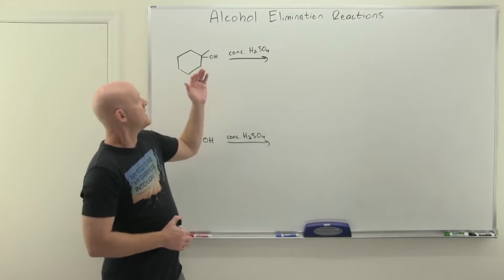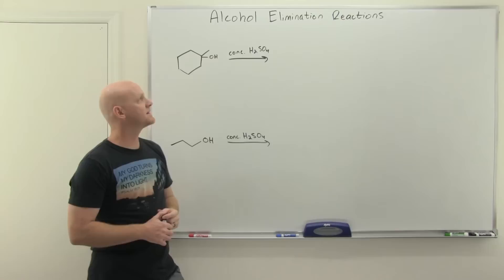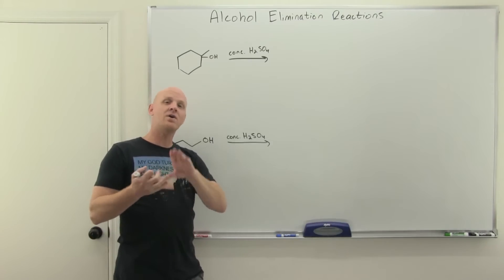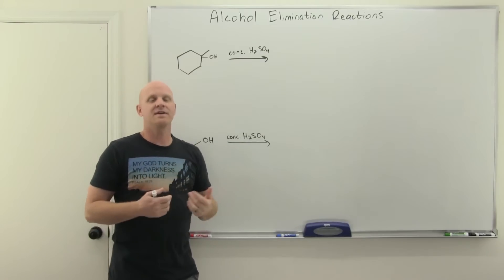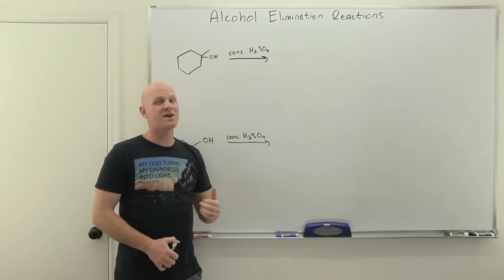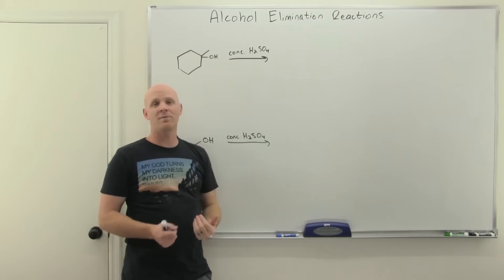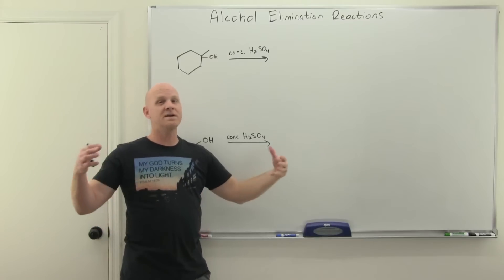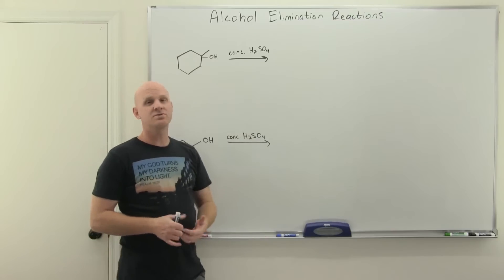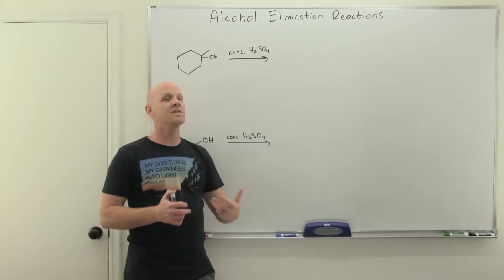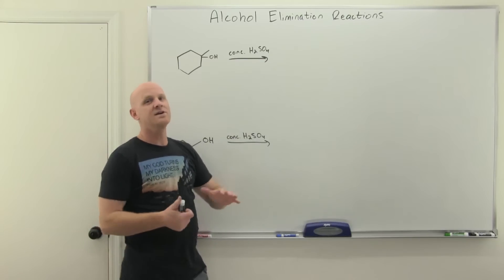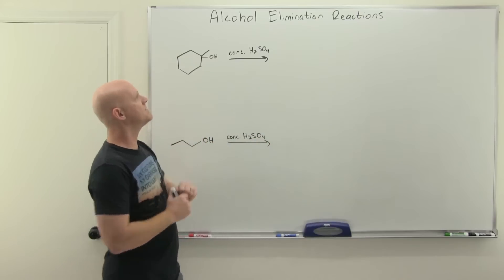The reagent of choice for alcohol elimination is concentrated H2SO4. With HCl, HBr, or HI, we might be doing substitution, because chloride, bromide, and iodide are good nucleophiles. But when we use H2SO4, the conjugate base is HSO4⁻, which is big and not a good nucleophile — it removes a normal substitution reaction from being on the table. So for now we're going to focus just on the elimination.